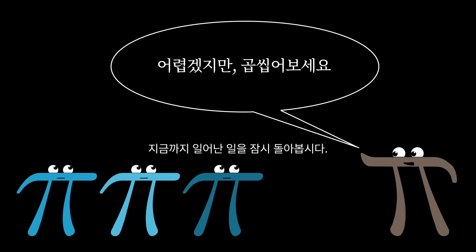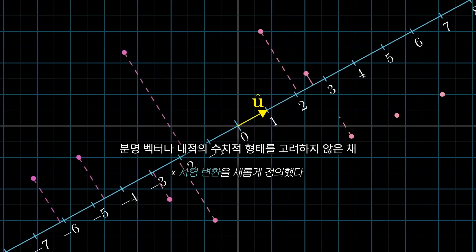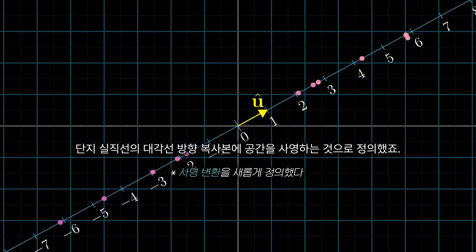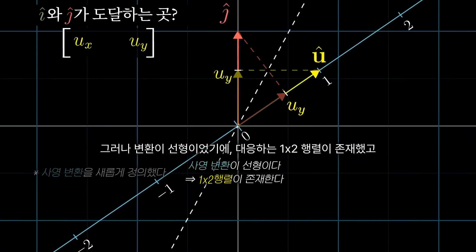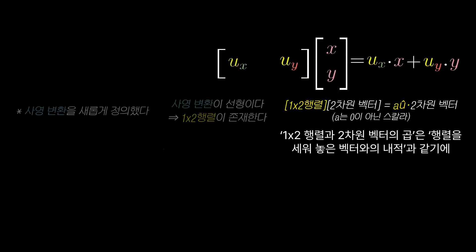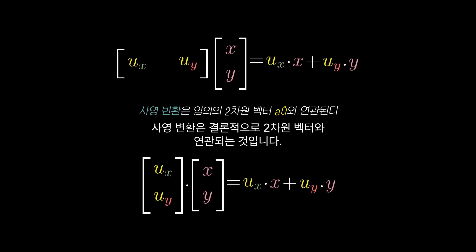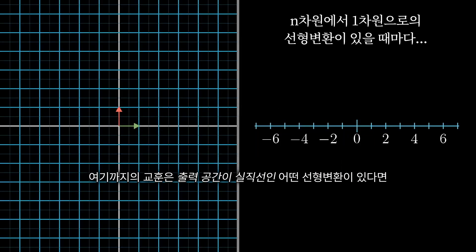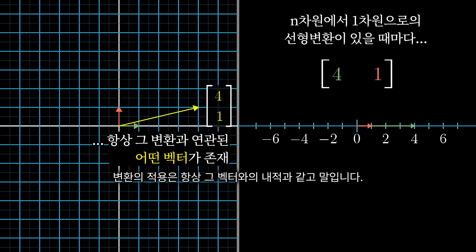Take a moment to think about what happened here. We had a linear transformation from 2D space to the number line, which was not defined in terms of numerical vectors or numerical dot products — it was just defined by projecting space onto a diagonal copy of the number line. But because the transformation is linear, it was necessarily described by some 1 by 2 matrix. And since multiplying a 1 by 2 matrix by a 2D vector is the same as turning that matrix on its side and taking a dot product, this transformation was inescapably related to some 2D vector. The lesson here is that any time you have one of these linear transformations whose output space is the number line, no matter how it was defined, there's going to be some unique vector v corresponding to that transformation, in the sense that applying the transformation is the same thing as taking a dot product with that vector.